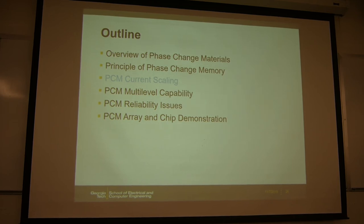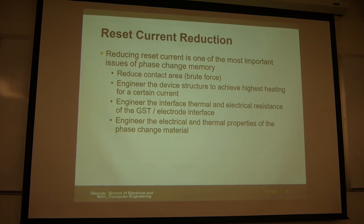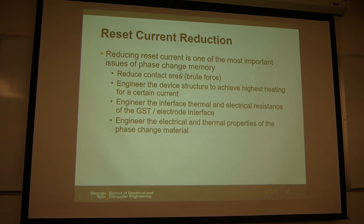The biggest challenge for phase change memory is the high current consumption. As seen in the data, you need around 600 microamps to melt the material — that's huge power consumption. We need to find a way to reduce the current, especially for the reset operation which requires melting the material. One approach is to reduce the contact area, and the reset current scales linearly with that contact area.